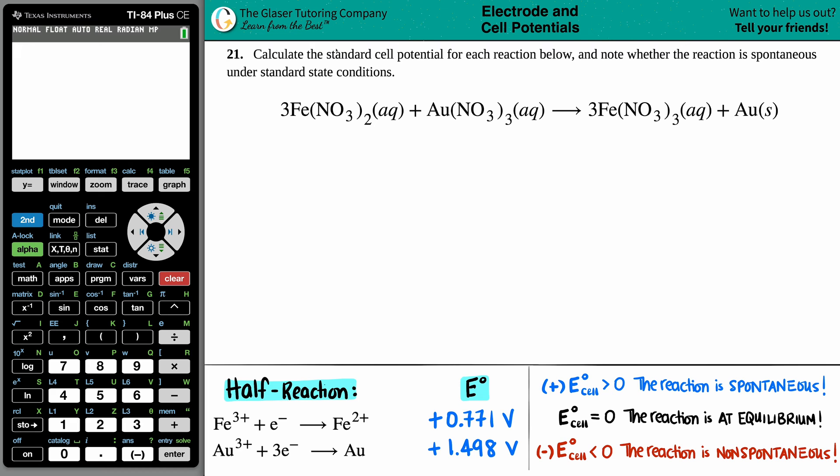Number 21: Calculate the standard cell potential for each reaction below and note whether the reaction is spontaneous under standard state conditions. So we want to find the standard cell potential, which is E°cell. The little notch at the top, like a degree sign, means standard, so under standard state conditions.